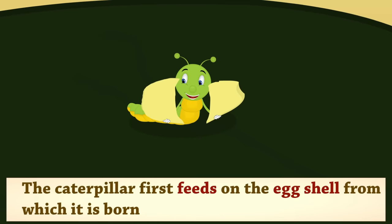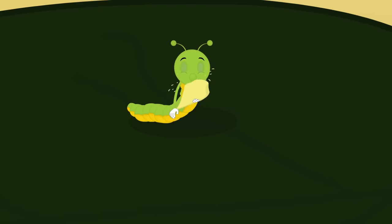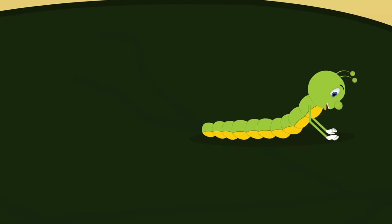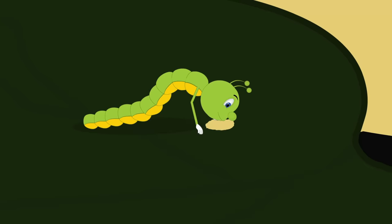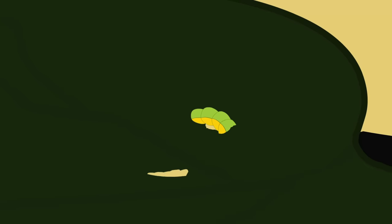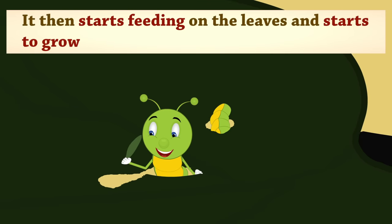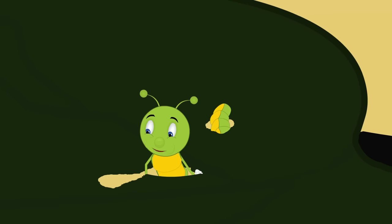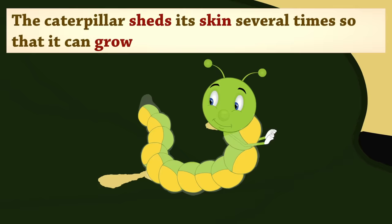The caterpillar first feeds on the eggshell from which it is born. It then starts feeding on the leaves and starts to grow. The caterpillar sheds its skin several times so that it can grow.